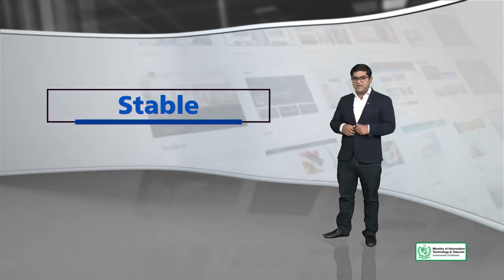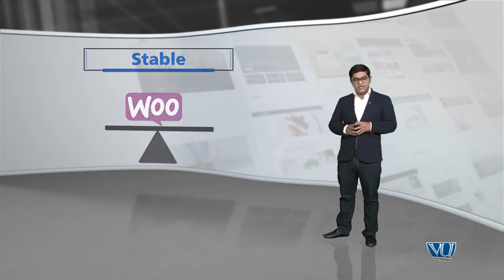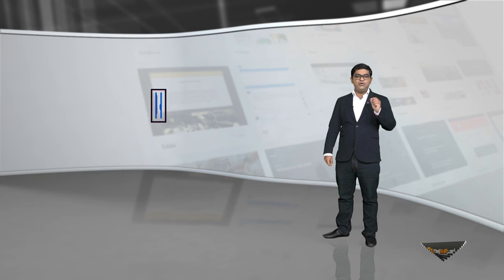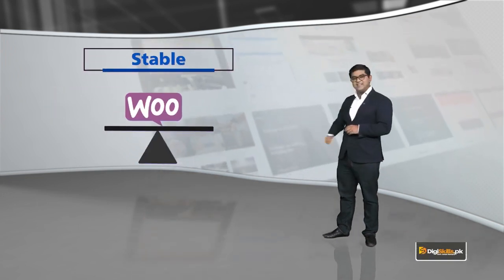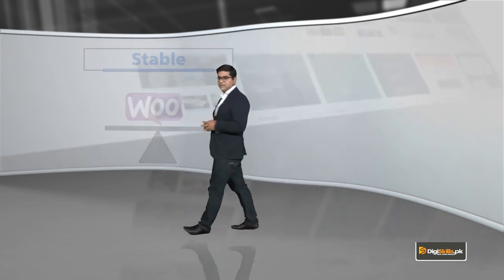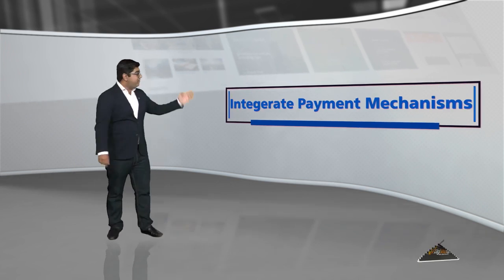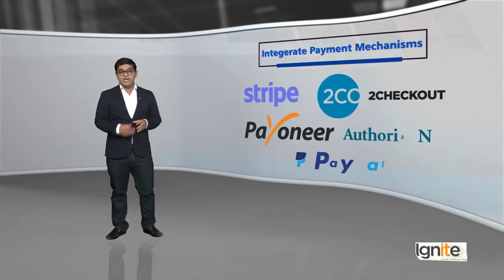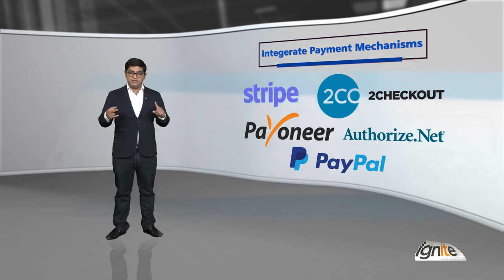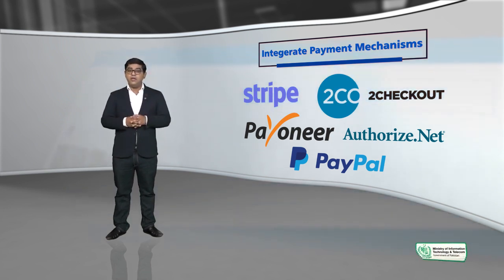WooCommerce is also stable. You need a platform which is not just feature-rich and secure, but also stable — so that if you list a thousand products on it, it is able to function properly. WooCommerce is highly stable. On WooCommerce, you can integrate different payment mechanisms: you can integrate Stripe, 2Checkout, Payoneer, Authorize.net, and PayPal as well.